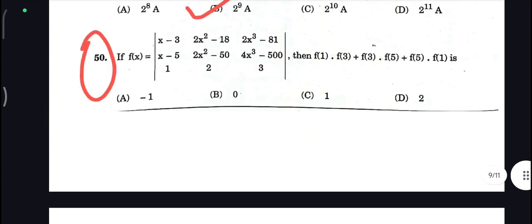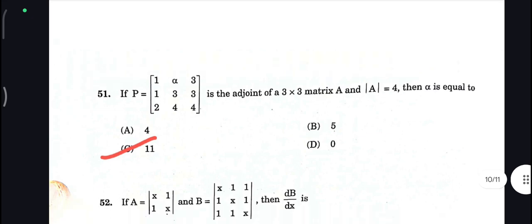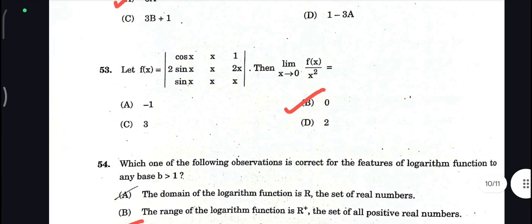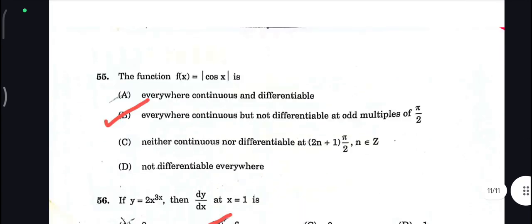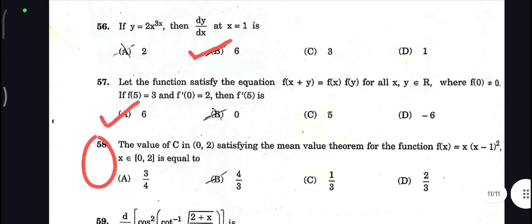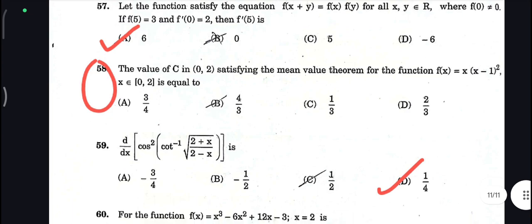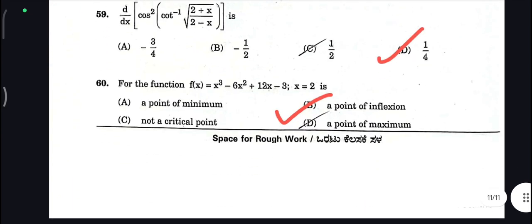This question, you might get grace for this, but let's see. 51 is C, 52 is A, 53 is B, 54 is C, 55 is B, 56 is B, 57, 58 is still out of syllabus. Next 59 is 1 by 4, D is your correct answer. Next 60 A, point of inflection.